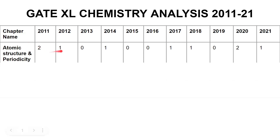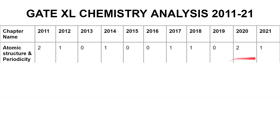So two marks, one mark, zero — that is, in 2013 there were no questions asked from this topic. Similarly for 2015, 2016, and 2019. In other years we had one question each asked from this particular unit. In 2020, two mark questions were asked. These are the marks and not the number of questions — so 'two' means there was a two mark question asked.